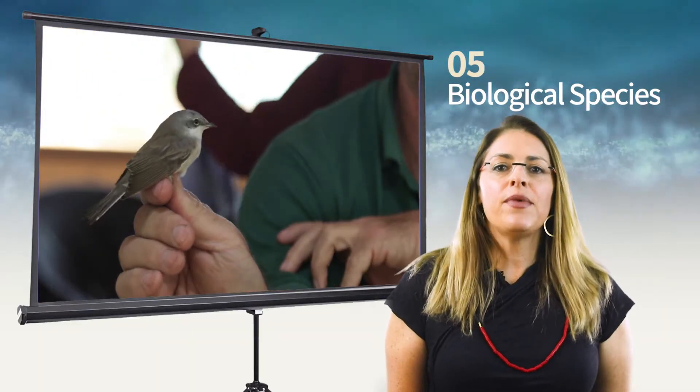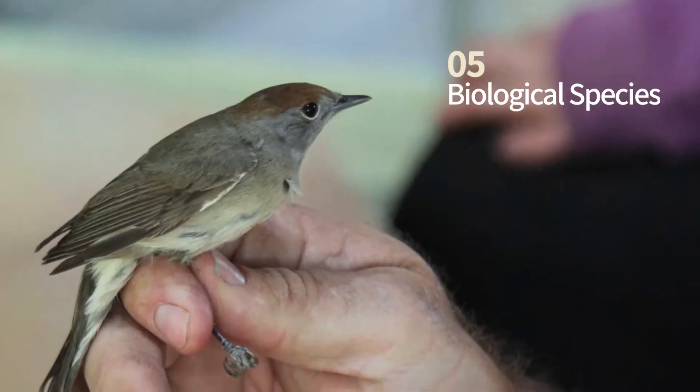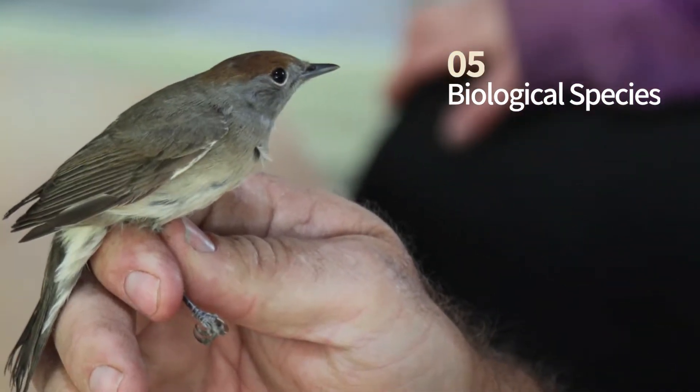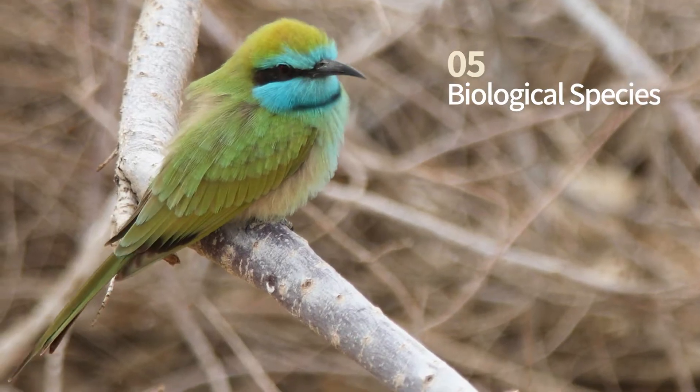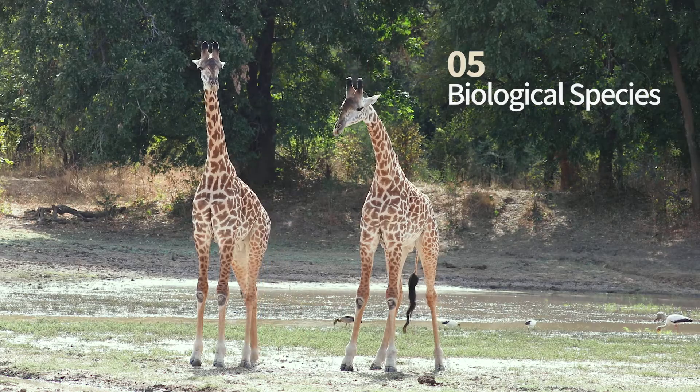The biological species is the most basic taxonomic unit. We will visit the Jerusalem Bird Observatory and discuss the definition of a species.